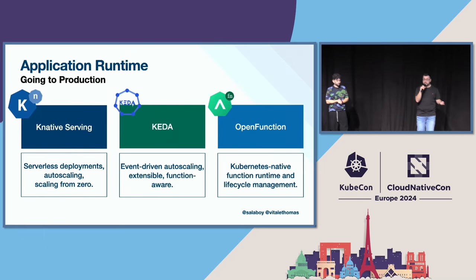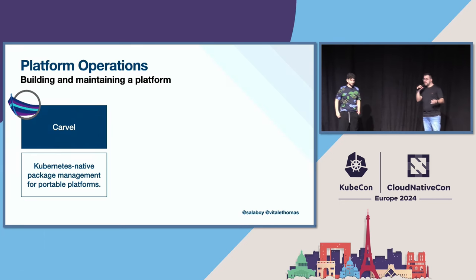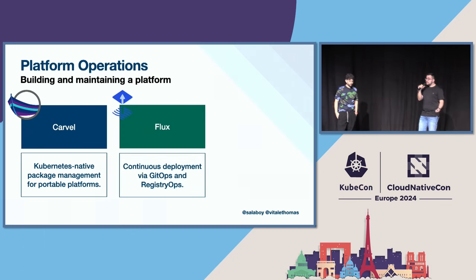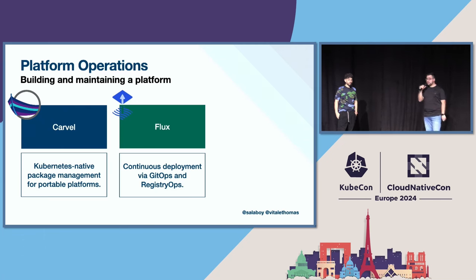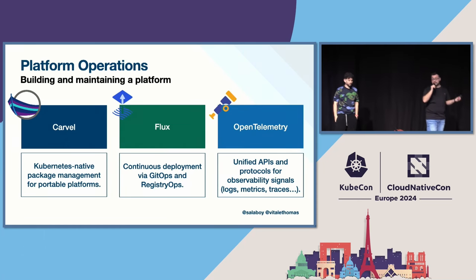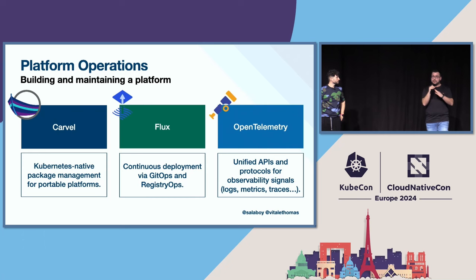We use Carvel to package each capability as an OCI artifact, and everything is bundled as one big package installable on any environment with one command. We have Flux for continuous deployment of all our application workloads and to manage all the different data services as well. And then OpenTelemetry — because observability is really, really important. We can't go to production without observability. OpenTelemetry provides unified APIs and protocols with support across different languages, ensuring this polyglot experience across the entire lifecycle of an application.